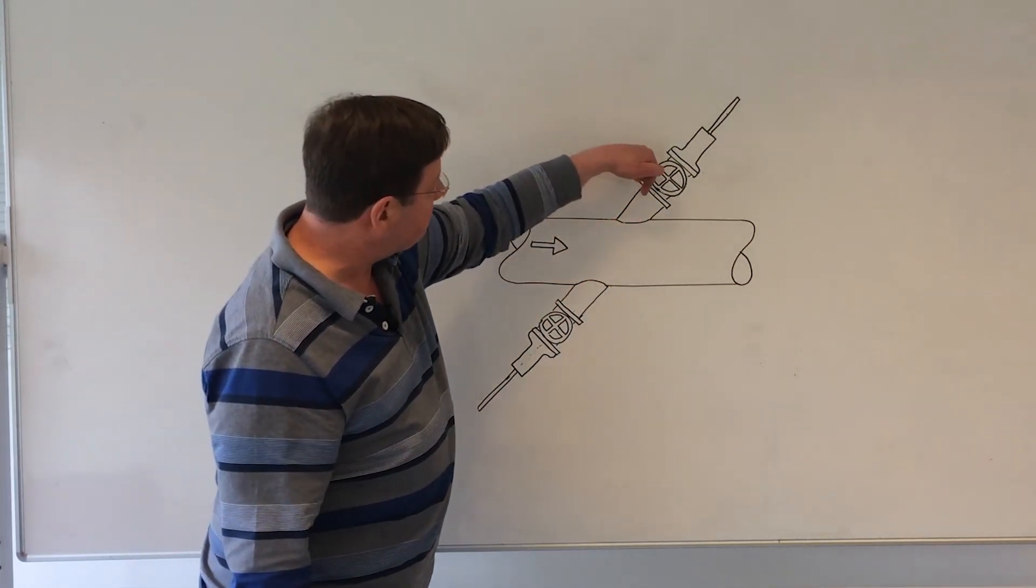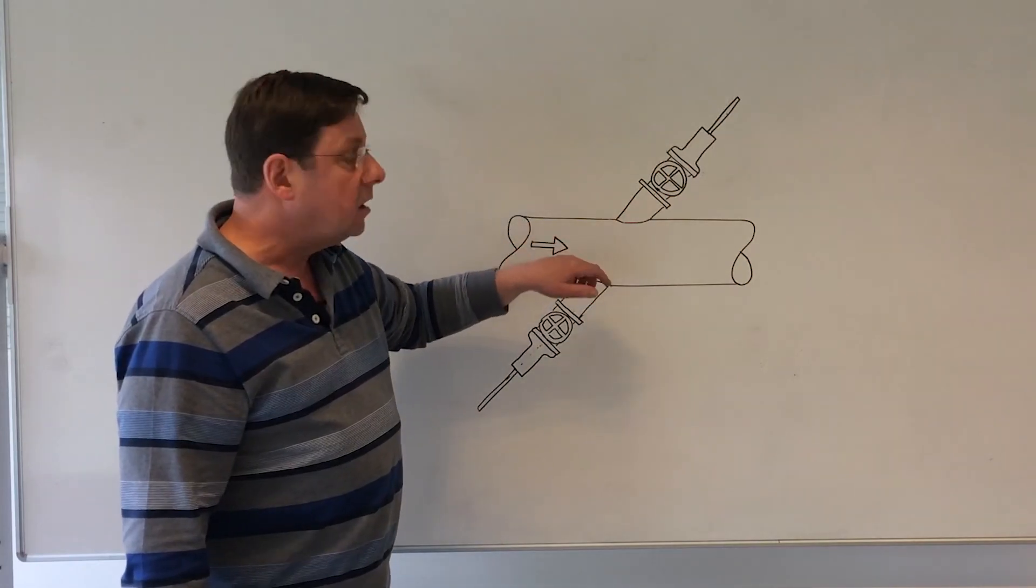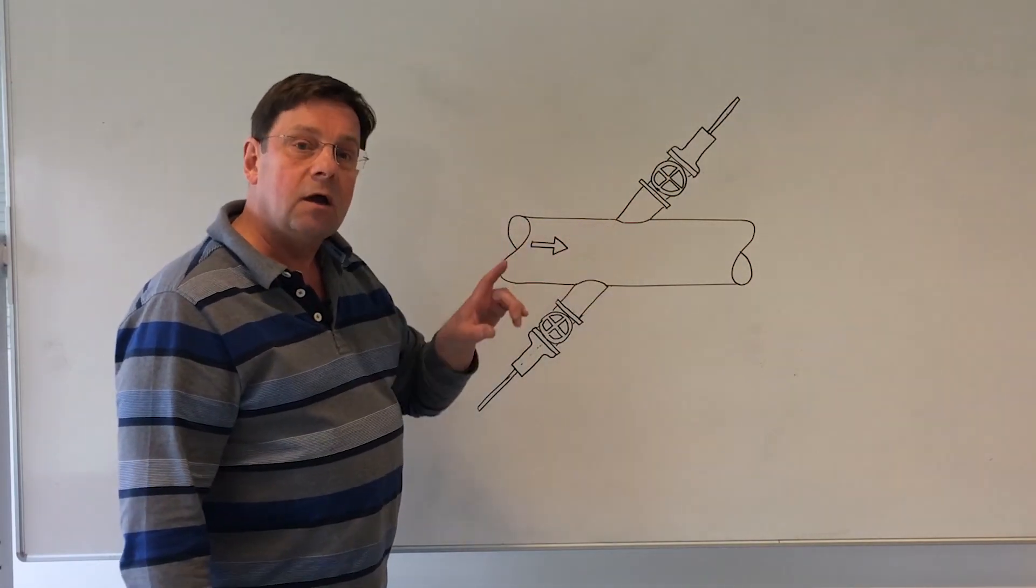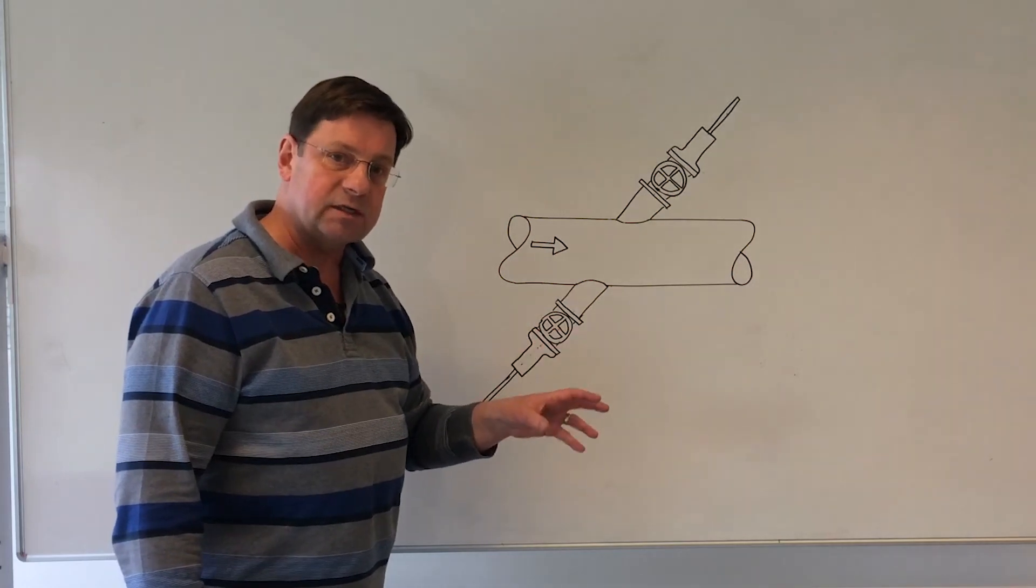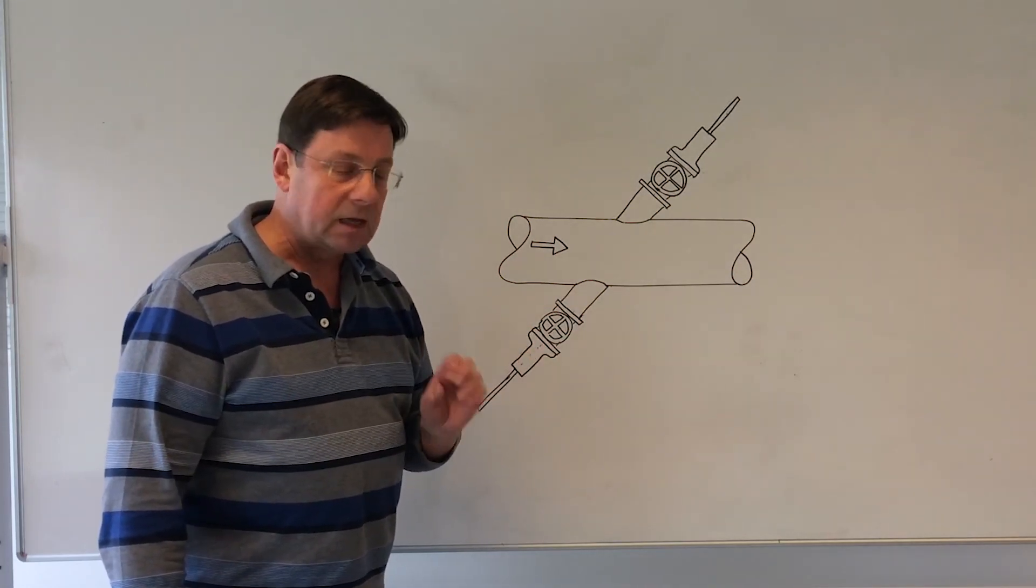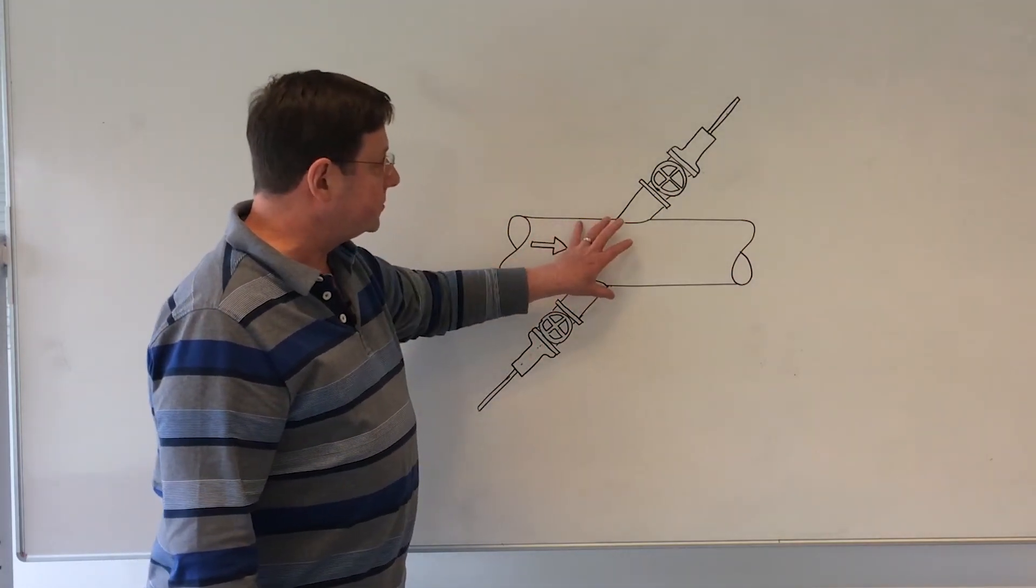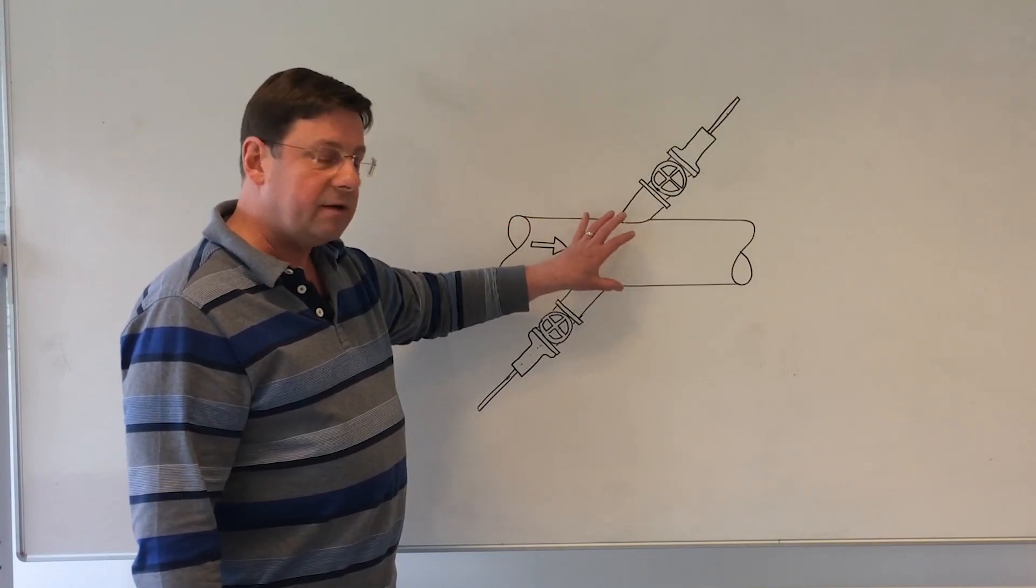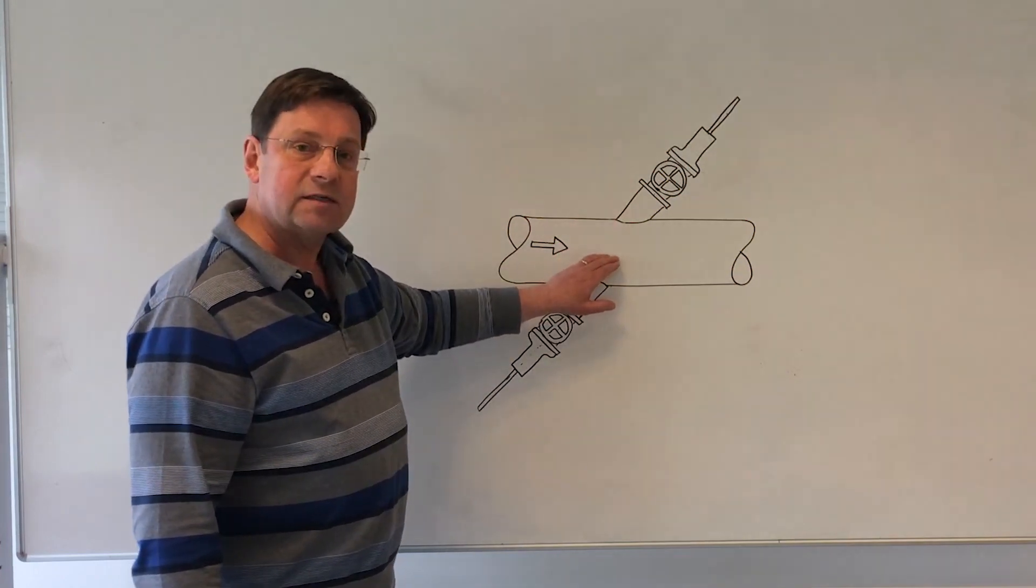Then we send the signal in the opposite direction, and again measure how long that takes. Remember that the transducer can work either as a transmitter or a receiver. And once we have both of those times measured, we can then calculate the flow of gas in the pipe.